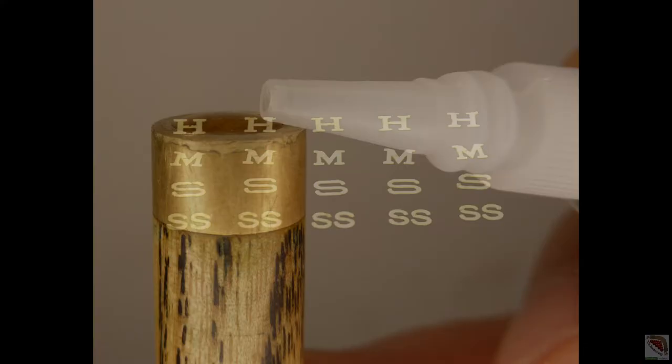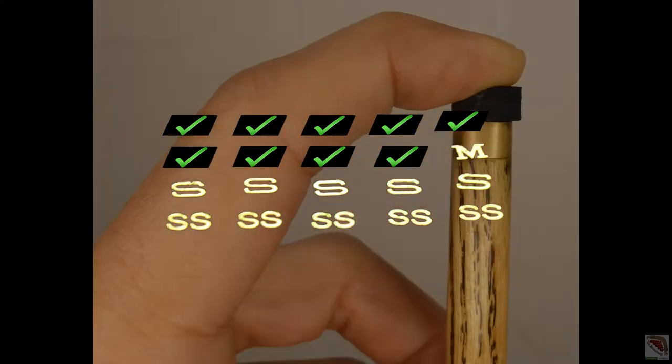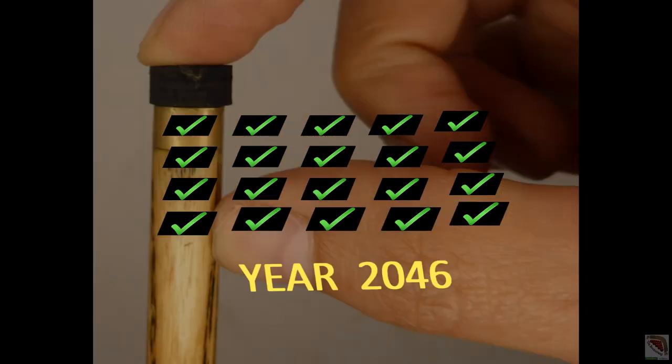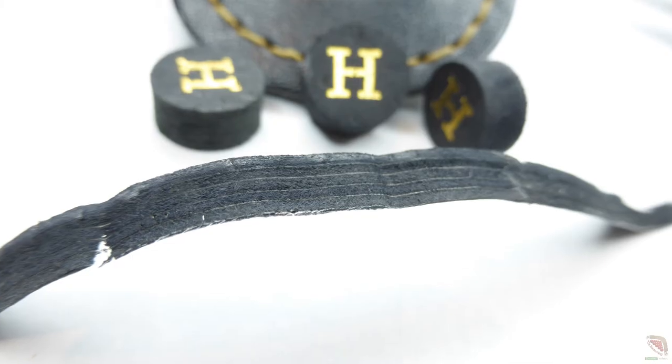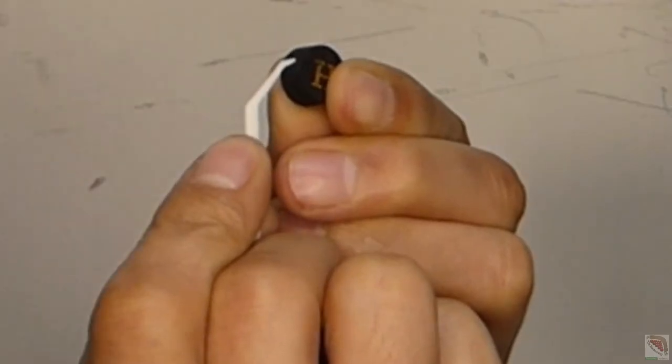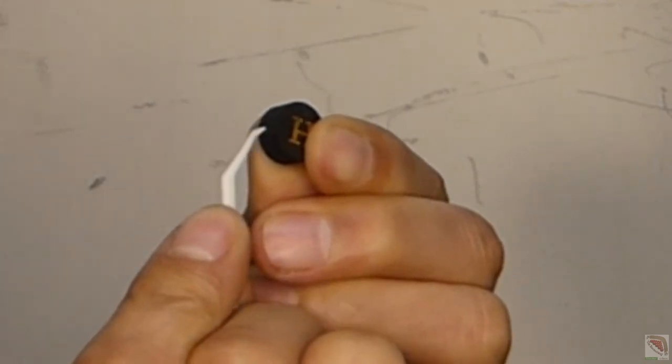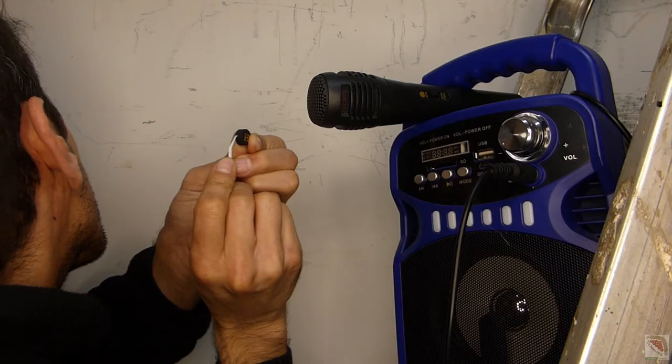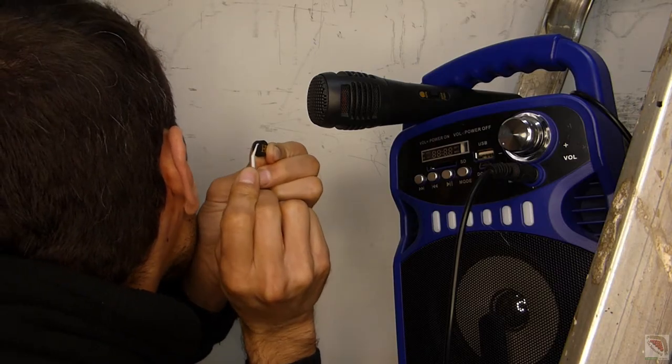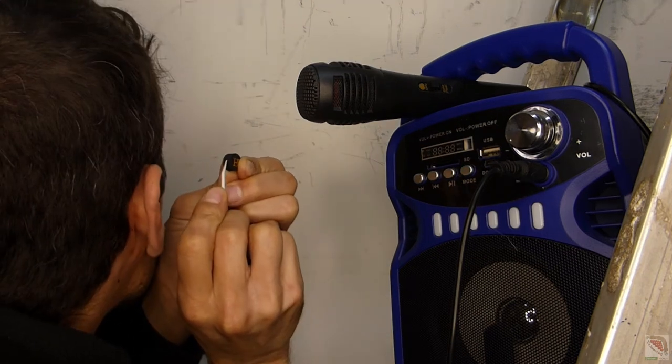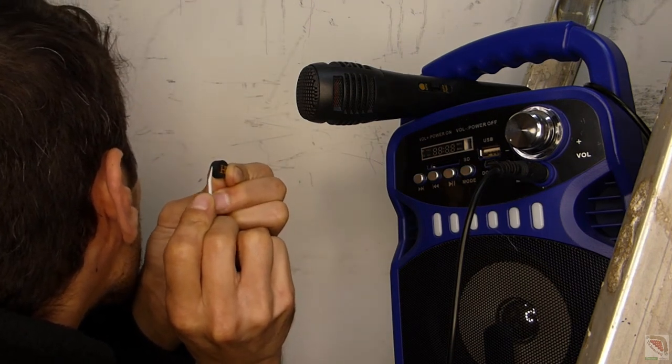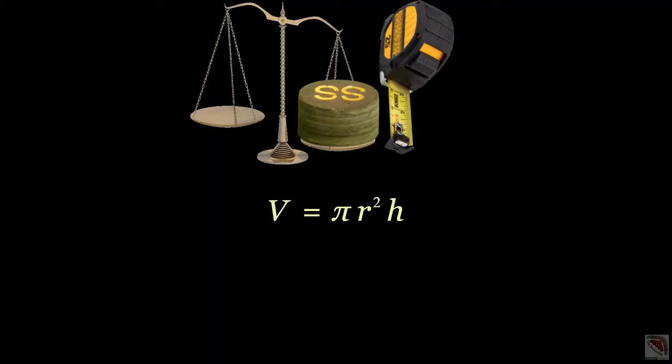So instead of him having to glue the tips to his cue and test them one by one, which would take ages, and instead of having to listen to him babble on saying 'I think this one feels softer' or 'I think this one sounds harder,' which would be a highly inaccurate method to test the tips and extremely annoying...